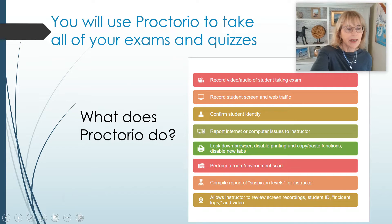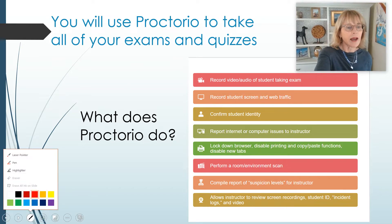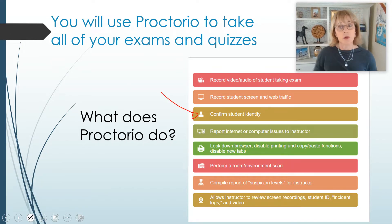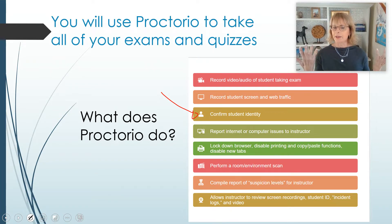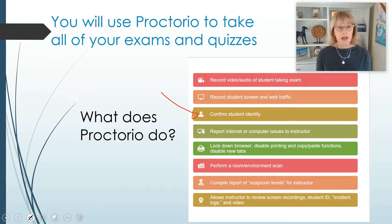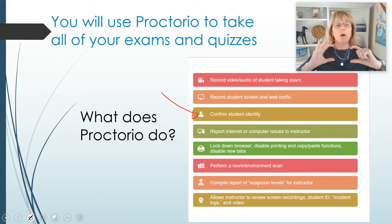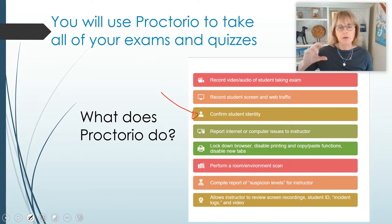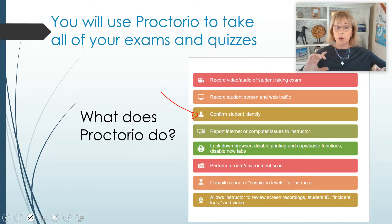Another thing Proctorio will do is make sure that every person who's taking the exam is the right person. Just like a new iPhone knows that it's you when you pick it up, they do facial recognition, and so they will know that you are the person who is supposed to be taking the exam. In order to make that work, you are required to show your California driver's license, California ID card, or your Cerritos College ID card with a photo on it.